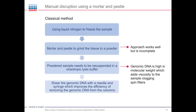A classical method everyone knows is using a mortar and pestle. You use liquid nitrogen to freeze your sample, then make a powder. This approach works, but it is incomplete. You re-suspend the powder in a chaotropic lysis buffer for further lysis, then shear the genomic DNA with a needle and syringe to improve efficiency and help remove gDNA. However, it's not always 100% reproducible — gDNA can add viscosity, cause clogging of filters, and even lead to a failed isolation procedure.